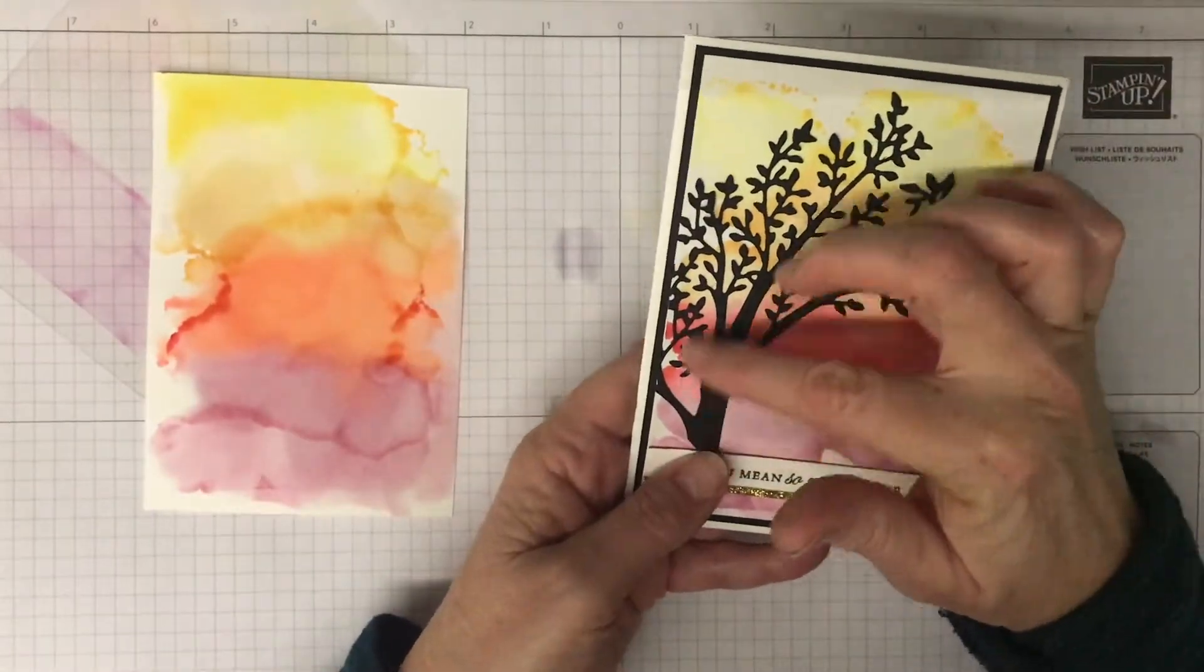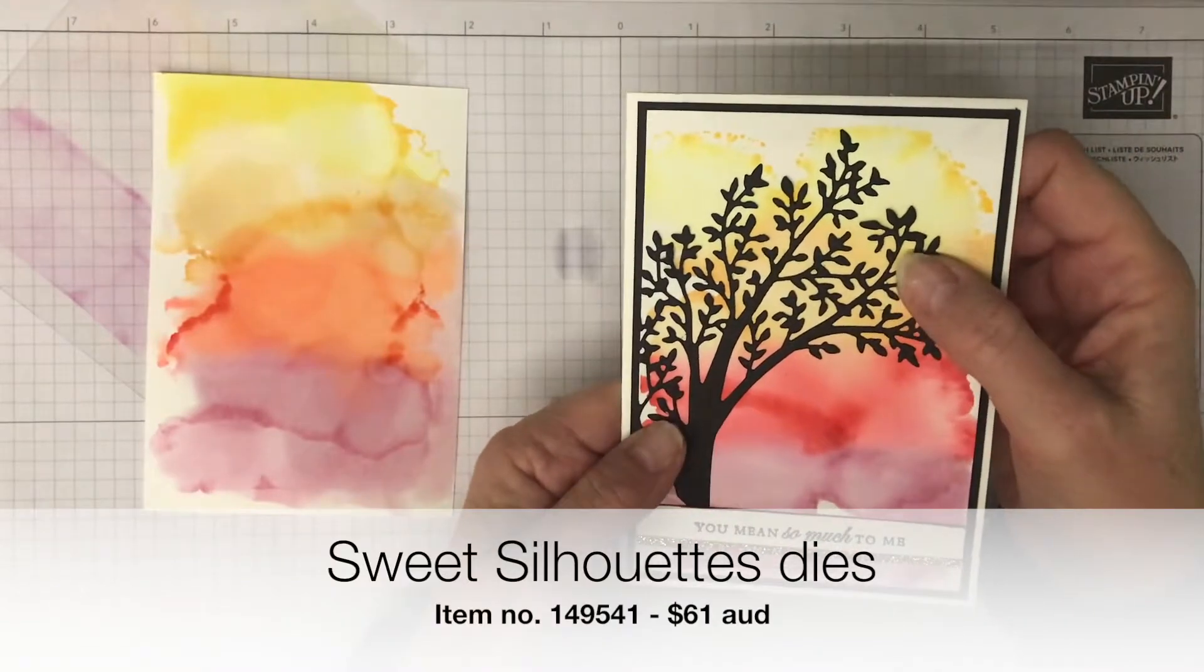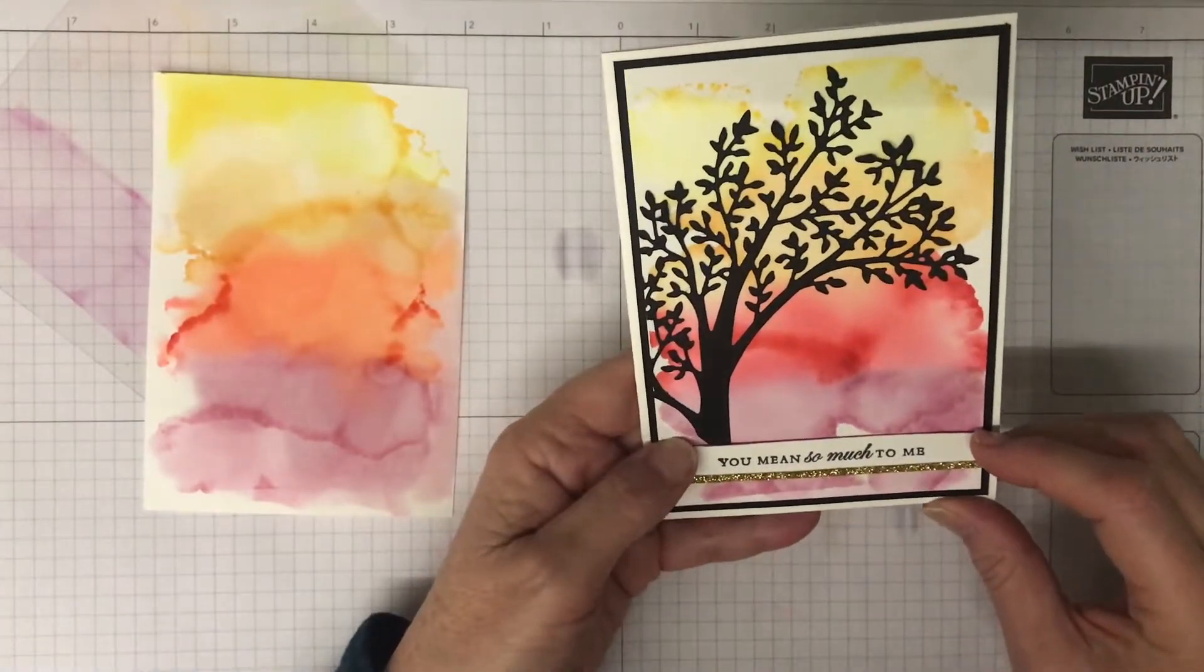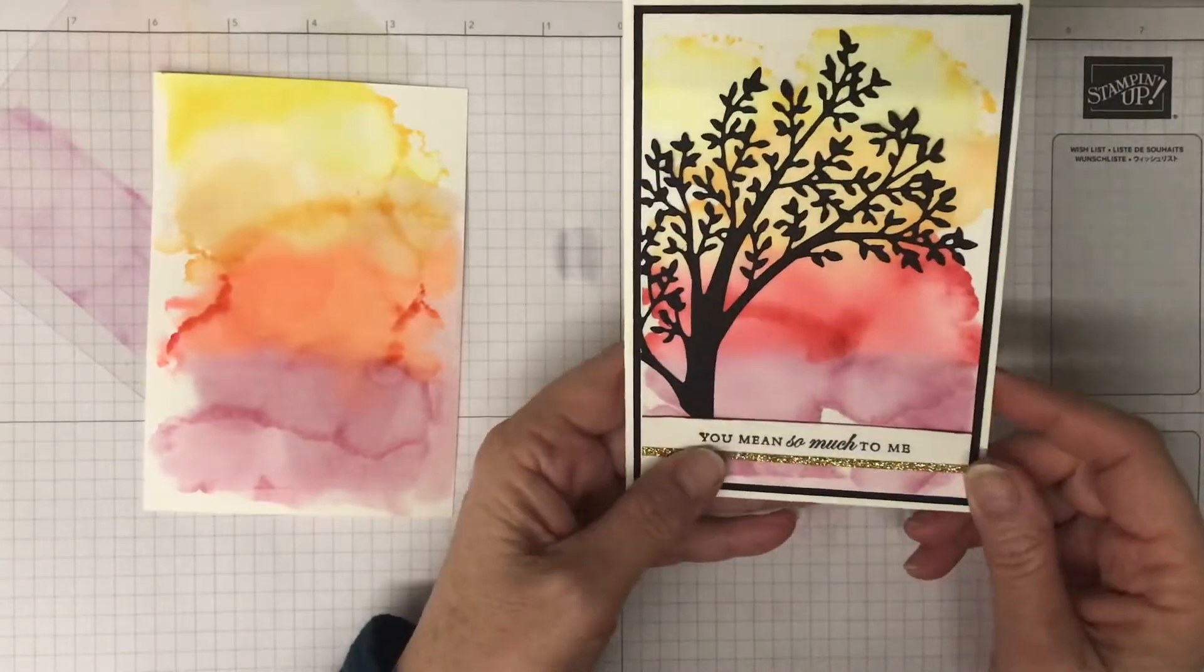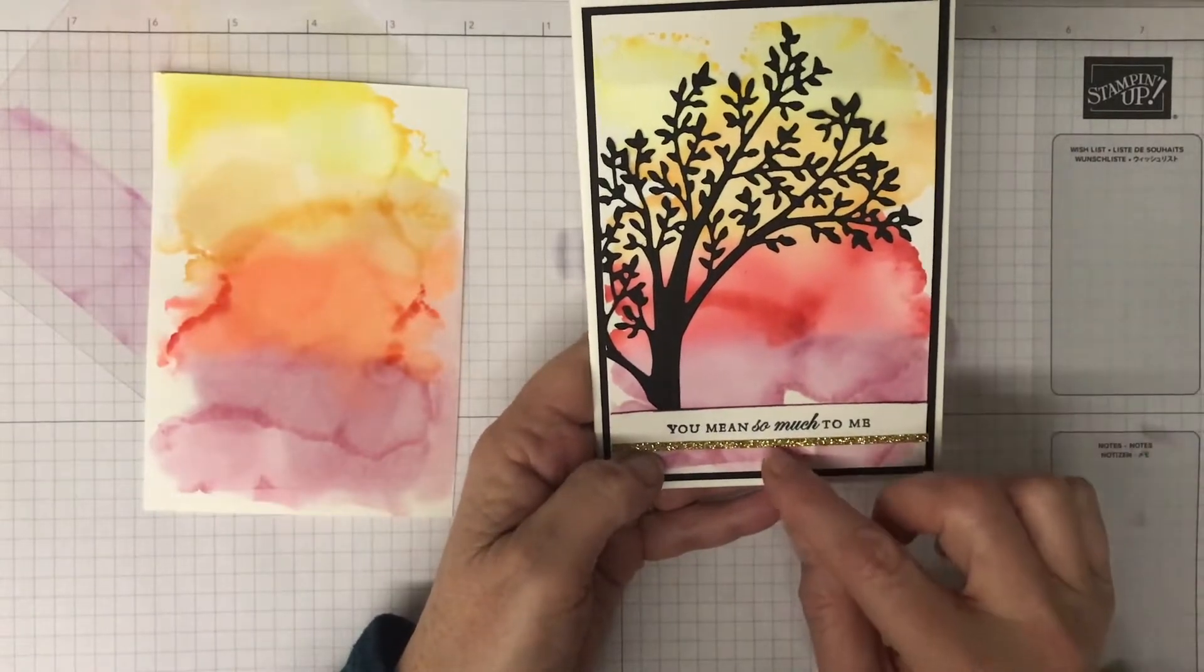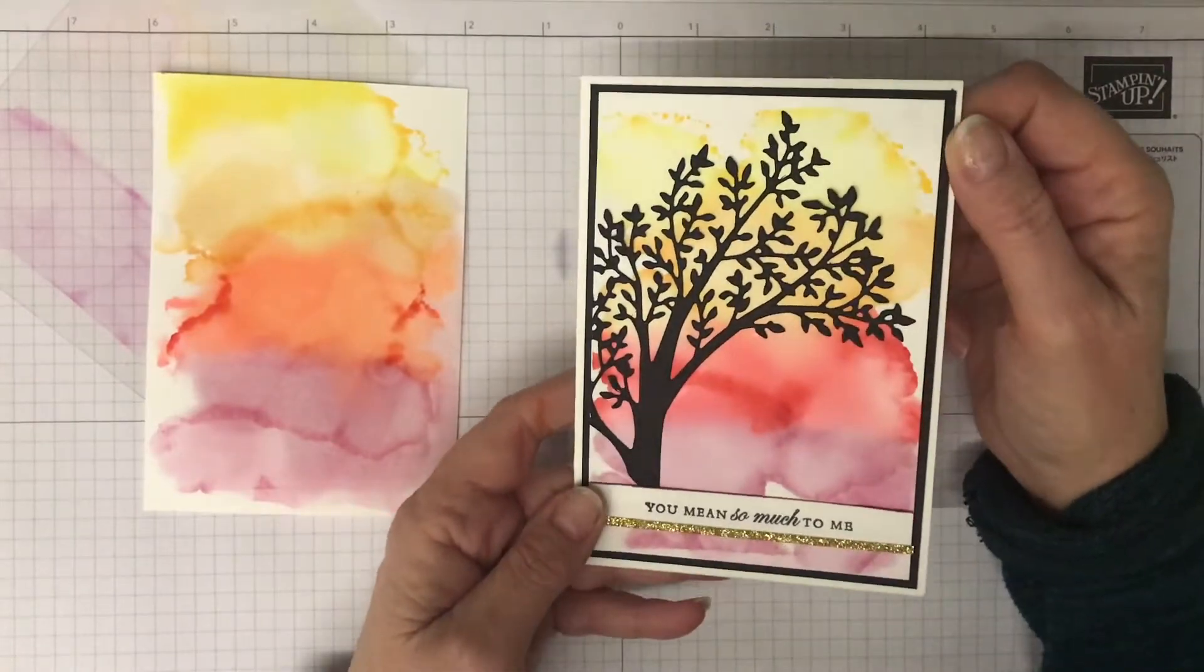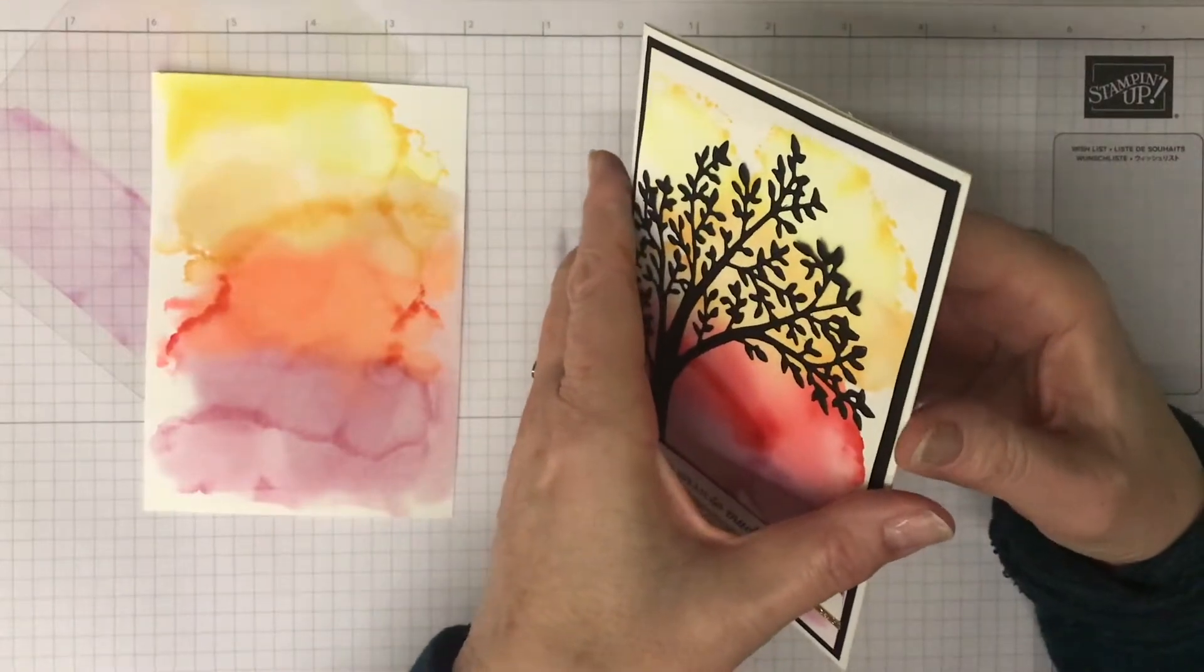For this one, I then use the tree branch from the Sweet Silhouettes die, which I cut out with my die cutting machine just out of black cardstock, and pop that straight over the top. I popped a sentiment here on the bottom just on a strip of white and put a little bit of gold glitter. The gold glitter is being retired from our current catalog, so if you love that, get it soon because it will be gone. Then I mounted it on a piece of black cardstock and put the whole thing onto a Whisper White thick piece of cardstock.